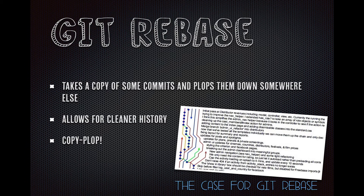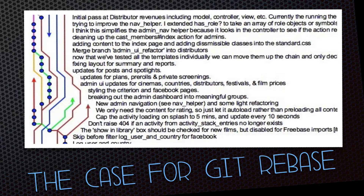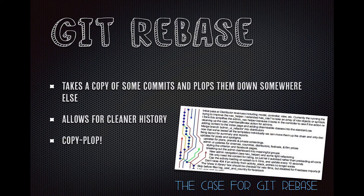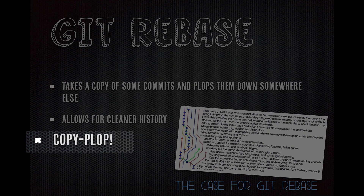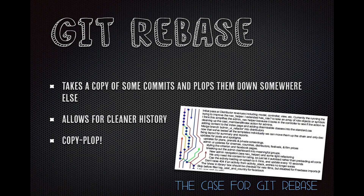Now we're going to talk about Git rebase. A Git rebase takes a copy of some commits and plops them down somewhere else. Why you'd use this is for a cleaner history — you can see there's a lot of merging going on, a lot of diverging branches, and it can make for some tricky history forensics if you want to figure out why a file changed so much. So a Git rebase would just help with that.